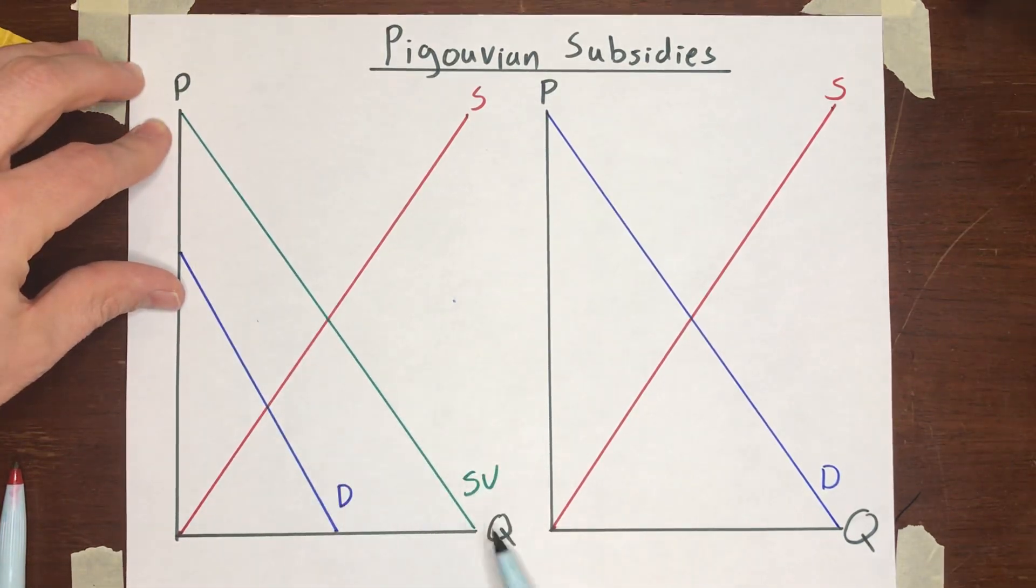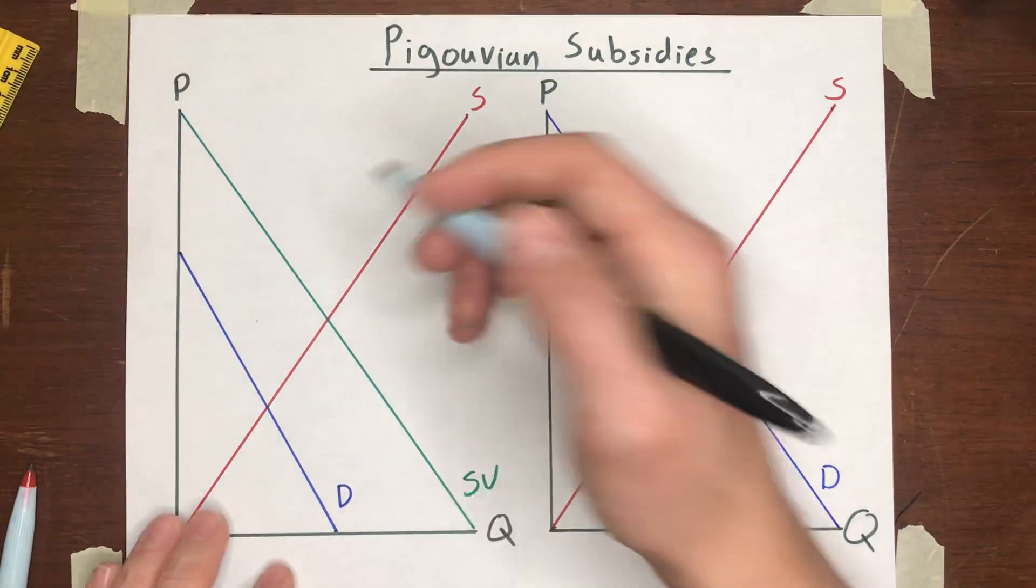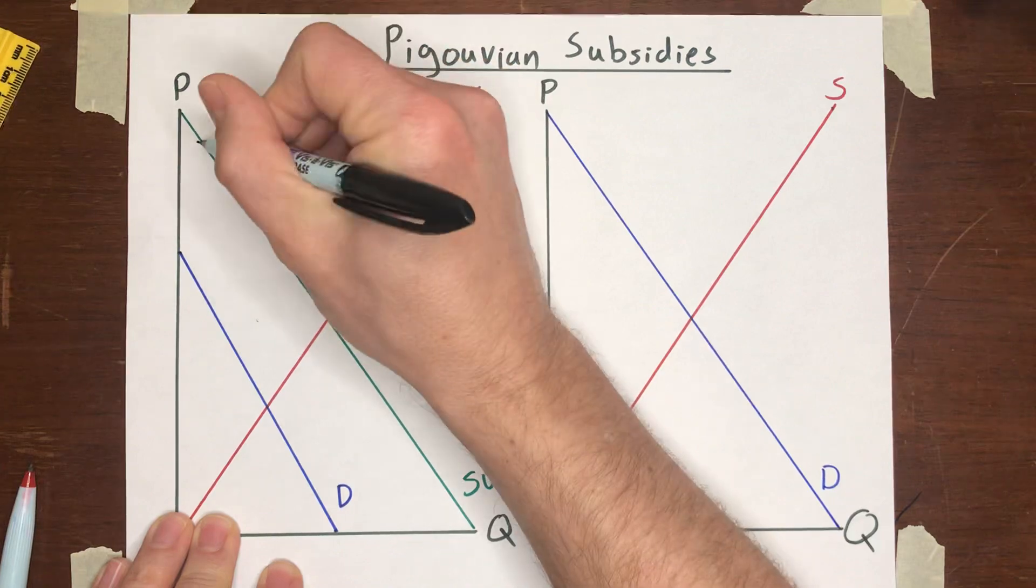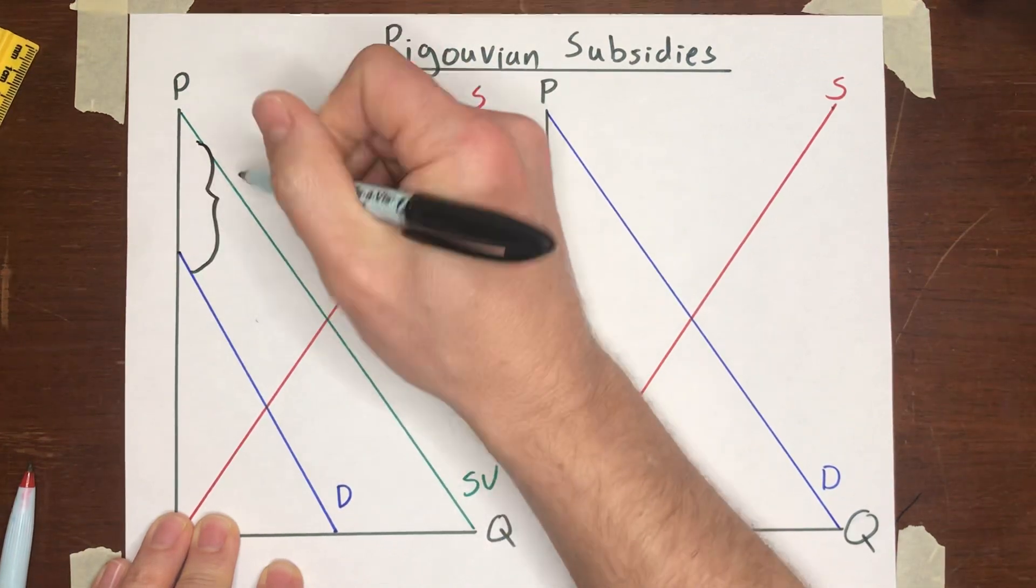The social value curve is out here. If you give, let's see, we'll use the distance between these two curves is the external benefit.